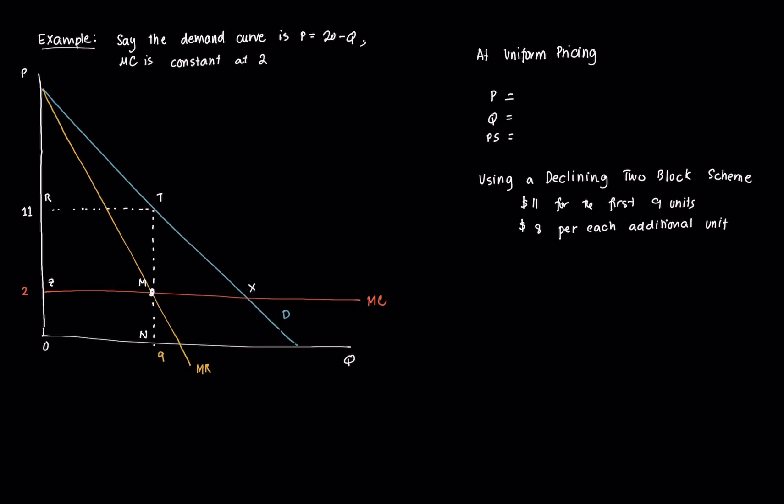So consider this case. Suppose the monopolist faces a demand curve equal to P is equal to 20 minus Q, and the marginal cost is constant at 2. So with uniform pricing, the monopolist would only charge one price. And as we said in our previous lectures, the condition that will happen is the monopolist will price based on MR is equal to MC. So we have an MR curve and an MC curve here. So the monopolist, based on this curve, assuming that D represents this demand, it will choose to charge a price of $11. And at this price, the quantity that will be sold are just 9 units.